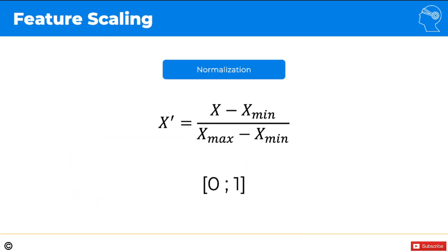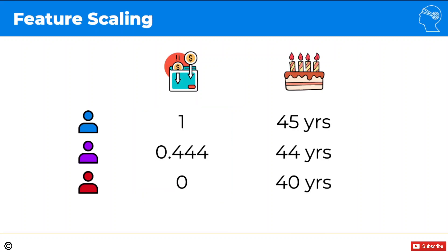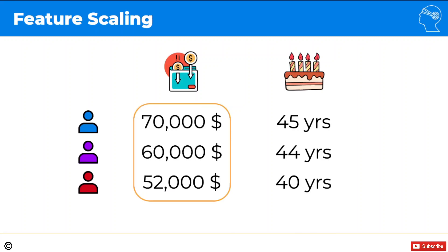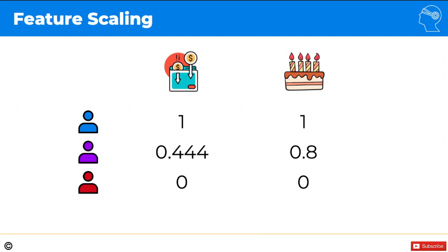Let's apply normalization. As a quick reminder, this is what the normalization formula looks like. We're going to apply it to the columns one by one — the dollar column first. After normalizing, our values will look like this. You can pause to do the manual calculations. Then we apply it to the years column, and our values will look like this. Now we can compare like for like.